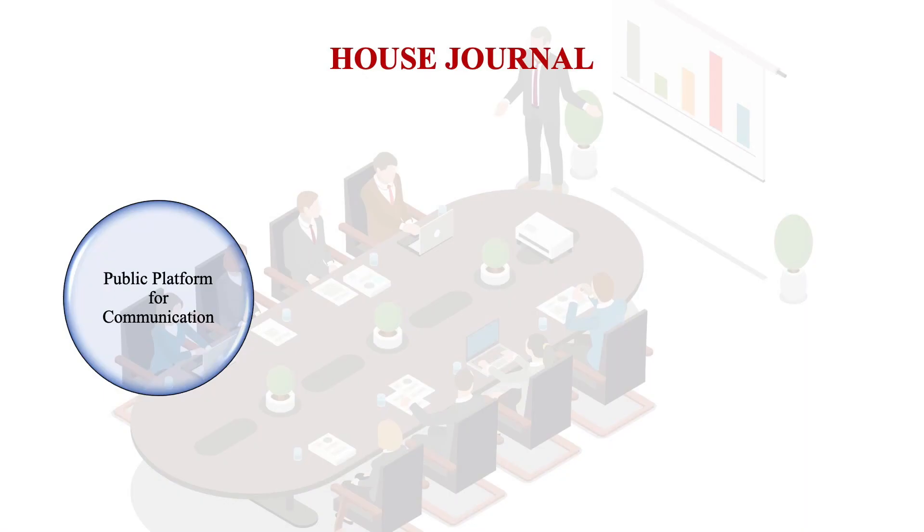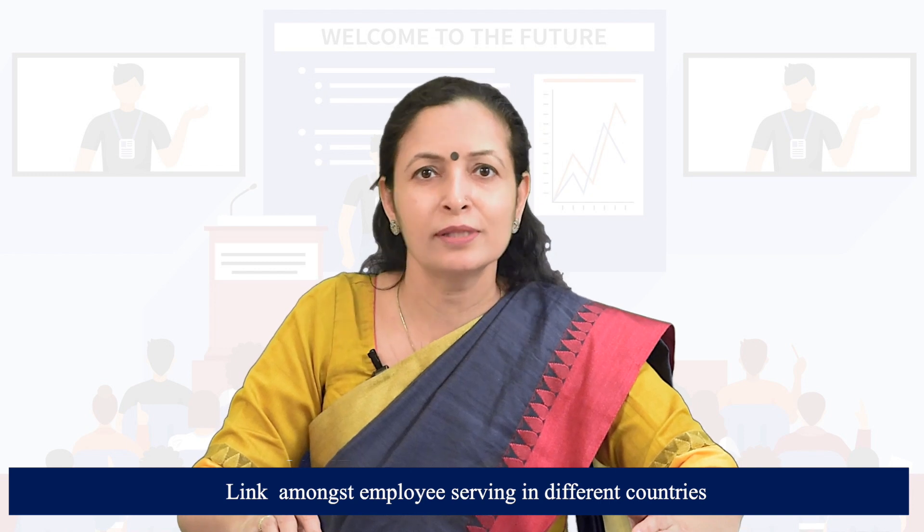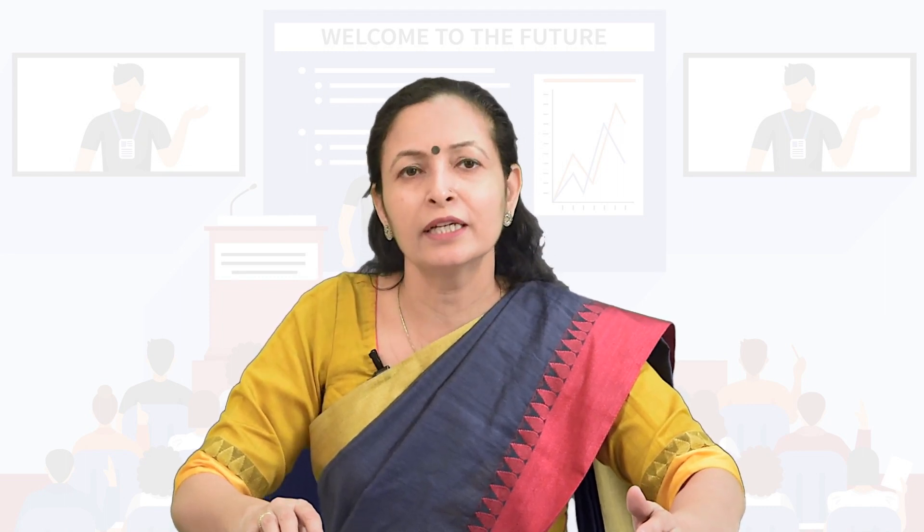House journals may also be used for external communication, so the same house journal may be carried out for both external and internal publics. The main objective of the house journal is to provide a platform for the exchange of communication — it acts as a link between internal publics and management. When corporations are expanding globally, a house journal acts as a link among employees serving in different countries. The content of the house journal may vary for different publics, and its form and design depend on the organization's philosophy and needs. The funds available for publication determine the quality of paper and printing. Generally, the PR department or public relations manager is the editor of the house journal.